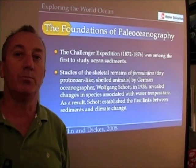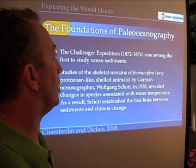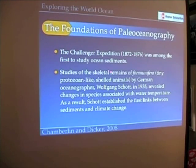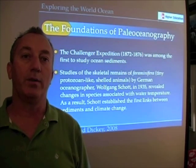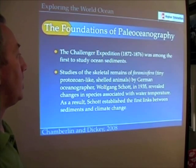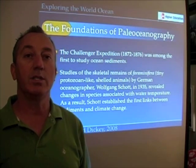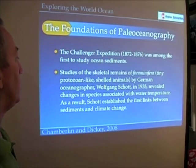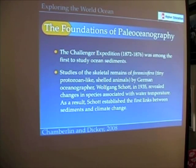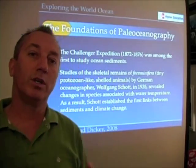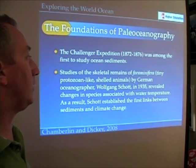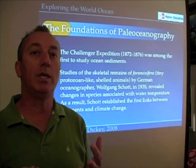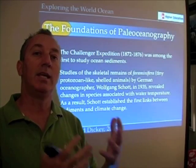If we take a brief history tour of the study of paleoceanography, we have to go back to the 1870s and the Challenger Expedition. It was among the very first oceanographic expeditions to explicitly take cores out of the bottom of the ocean. Studies of the remains of a particular organism called a foraminifera — they're sort of like amoebas with calcareous shells — by German oceanographer Wolfgang Schott revealed that these organisms seemed to have some relationship with water temperature. Wolfgang Schott was really the first scientist to make a link between the kinds of organisms we find in sediments and the ocean temperature.